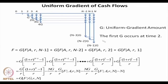We had drawn a diagram to show how we consider uniform gradient cash flows. There was one mistake in the earlier diagram — this should be N-1g because the first cash flow occurs at the end of the second interest period. So if this is 2 and 1g, for N it is N-1g, accordingly N-2g, N-3g. Basically, you have to consider each such cash flow as an equal payment series of amount g.